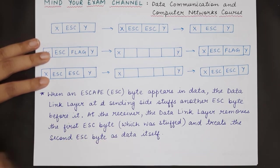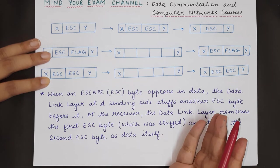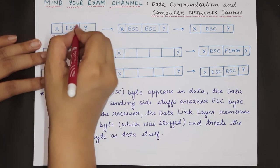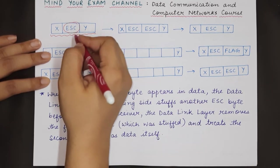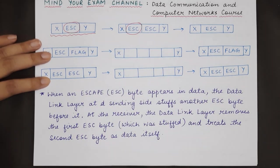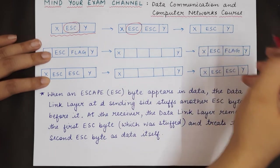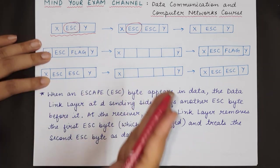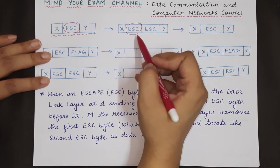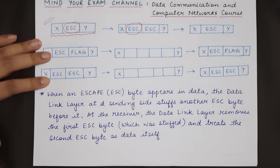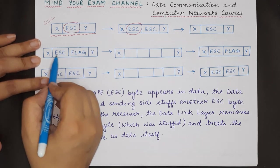Another scenario is when the data part contains the escape byte pattern itself. Both the escape byte and the flag byte are fixed patterns, and either can appear in the data section. If the data contains the escape byte pattern, we add another escape byte in front of it. When received, the receiver removes the first escape byte and treats the second escape byte as data, then sends it to the network layer — same as the original data.